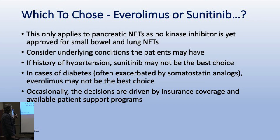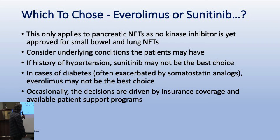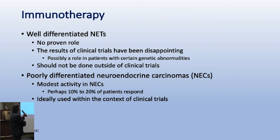Choosing between everolimus and sunitinib for pancreatic neuroendocrine tumors also depends on other conditions: if you have diabetes, sunitinib might be a better choice; if you have really bad hypertension, everolimus might be better. We have to look not just at the tumor but also the patient's underlying health conditions.